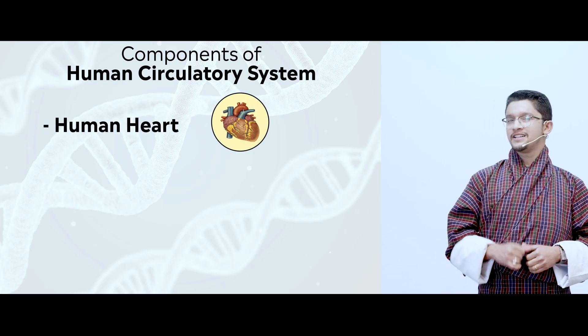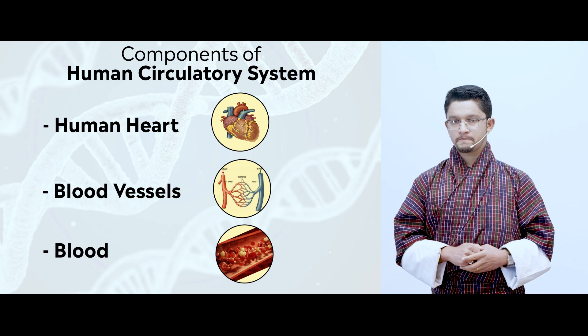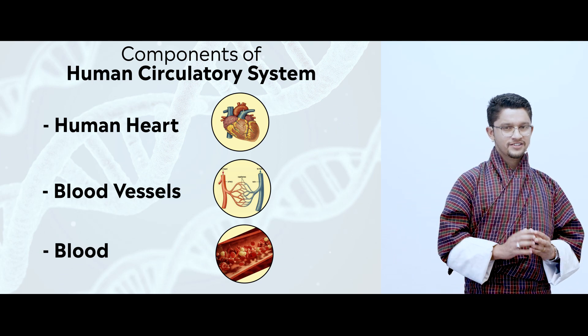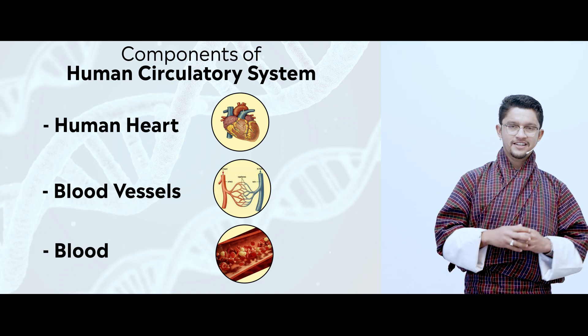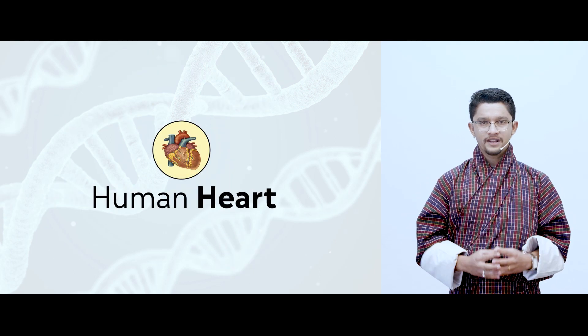Now let us move towards the human circulatory system, or the cardiovascular system. The cardiovascular system is made up of three components: the heart, the blood vessels, and the main substance that is moving — blood. In this lesson, we will be talking more about the structure of the human heart.